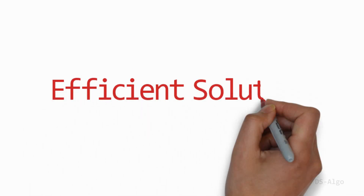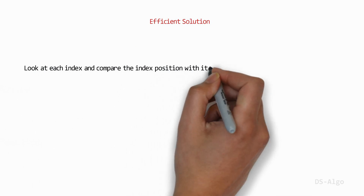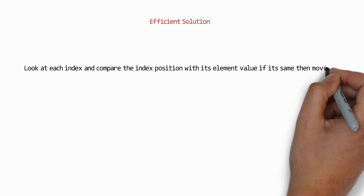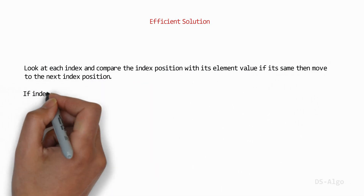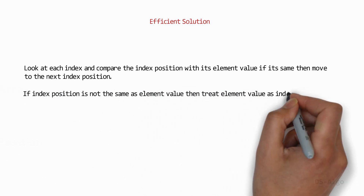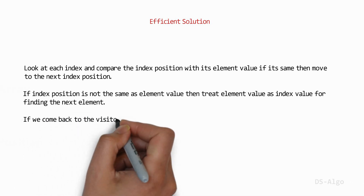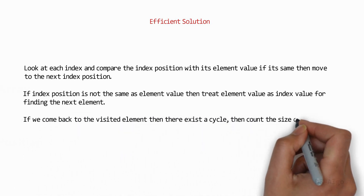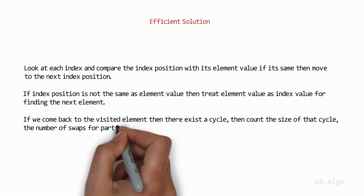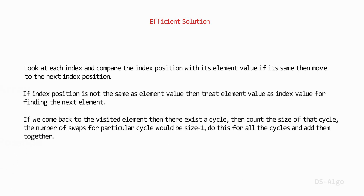There is an efficient solution. The idea is very simple: we look at each index and compare the index position with its value. If they are the same, move to the next index. If the index position is not the same as the element value, treat the element value as the index for finding the next element. If we come back to a visited element, a cycle exists. Count the size of that cycle — the number of swaps for that cycle is size minus 1. Do this for all cycles and add them together.